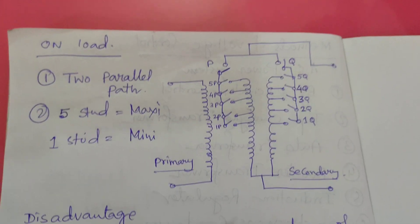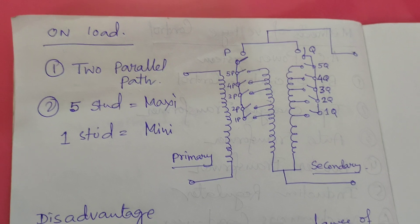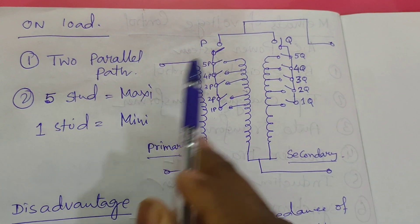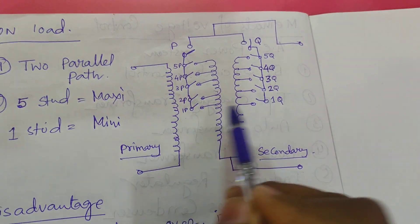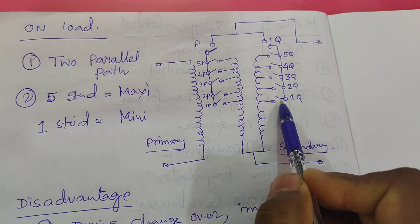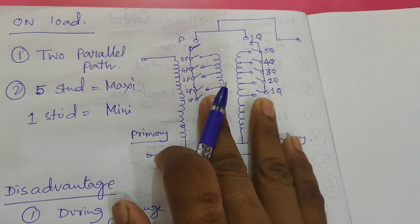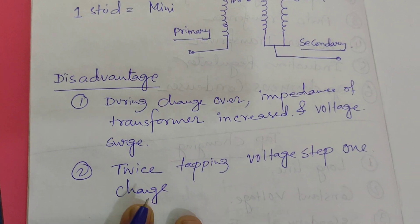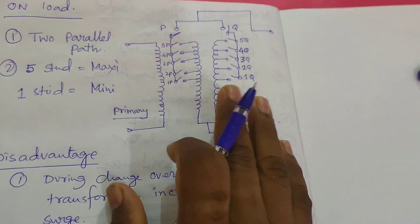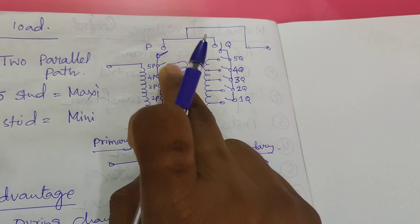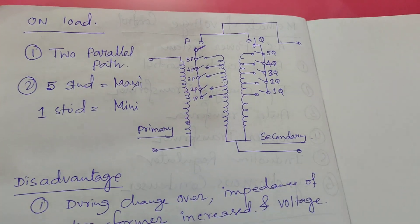To avoid tripping due to this voltage dip or voltage surge, you must adjust the relay settings accordingly. Tap position 5P and 5Q provides the maximum voltage, while 1P and 1Q provides the minimum voltage — change the tapping as per your requirement. A key disadvantage of onload tap changing is that changing one tap requires two steps: both the P and Q sides must each be switched, making it a critical two-step procedure.